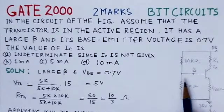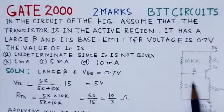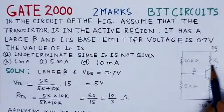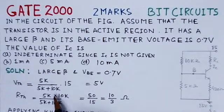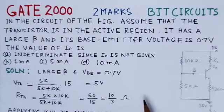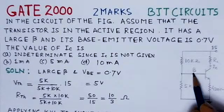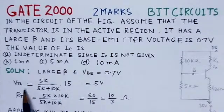Looking at the circuit, we find that this is a potential divider or self-bias circuit, and in this circuit we have to find the collector current. As we have seen in the self-bias circuit, we can simplify the analysis by writing the Thevenin's equivalent at node B.